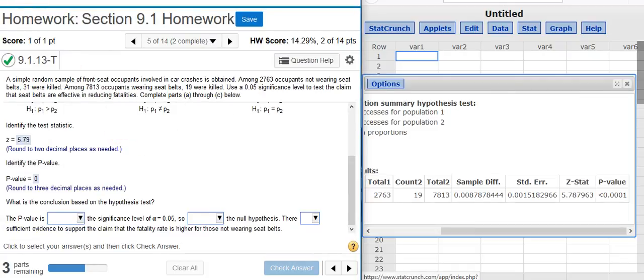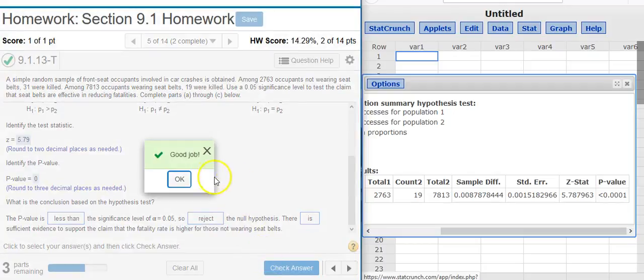Now I'm asked to make a conclusion based on the hypothesis test. We do that by comparing the P-value with the significance level. We're asked to test at 5%. The P-value is 0, so that's going to be lower than any significance level that we would use for testing. We're definitely less than the significance level. That means we're inside the region of rejection. So we're going to reject the null hypothesis. And because we reject the null hypothesis, there is sufficient evidence. Good job!